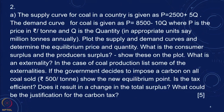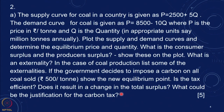The second question involves a standard supply-demand curve. The supply curve for coal in a country is given as P = 2500 + 5Q, and the demand curve is P = 8500 − 10Q, where P is the price in rupees per ton and Q is the quantity in million tons annually. We need to plot the supply and demand curves, determine the equilibrium price and quantity, find consumer and producer surplus, identify externalities of coal production, and analyze the effect of a carbon tax of 500 rupees per ton.